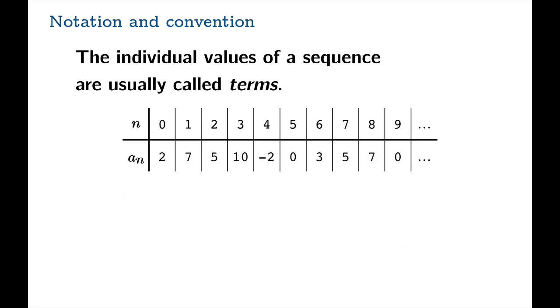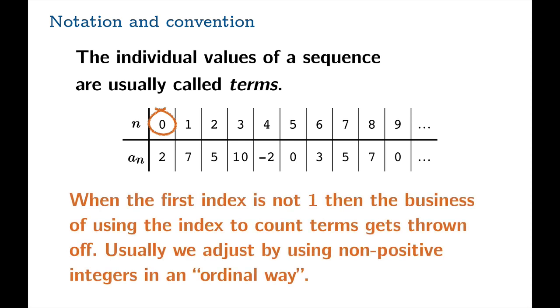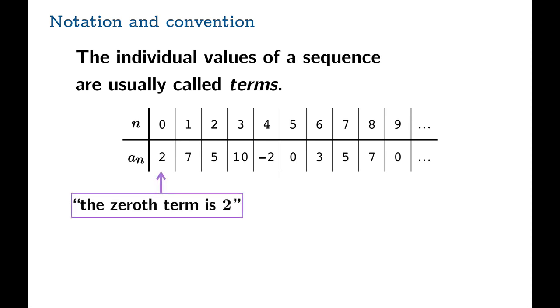But look what happens if your smallest index is not 1. So when the first index is not 1, then the business of using the indexed account terms gets thrown off. Usually we just adjust this by using non-positive integers in an ordinal way. So we adjust our language. So we might say in this case that the zeroth term of the sequence is 2. Then we can say the first term is 7. So by doing this, we sort of reserve the right to attach the actual value of the index to the ordinal language. So this might be the first term using this language, even though literally it is the second term of the sequence. But this is a sort of standard trick to get the language to agree.